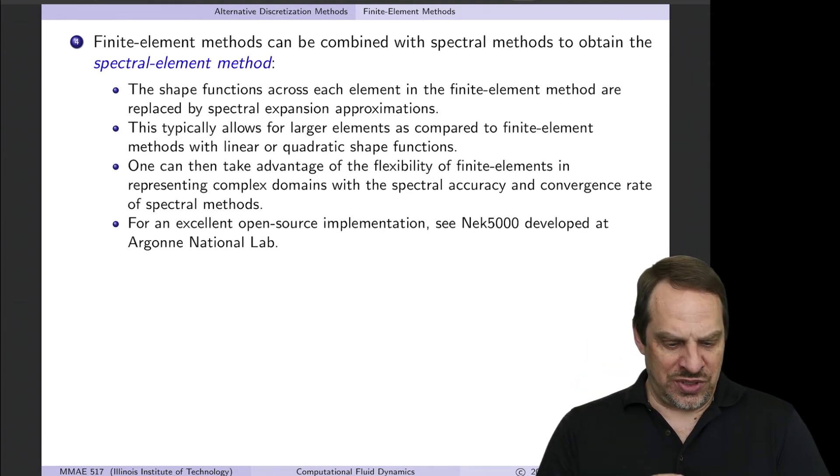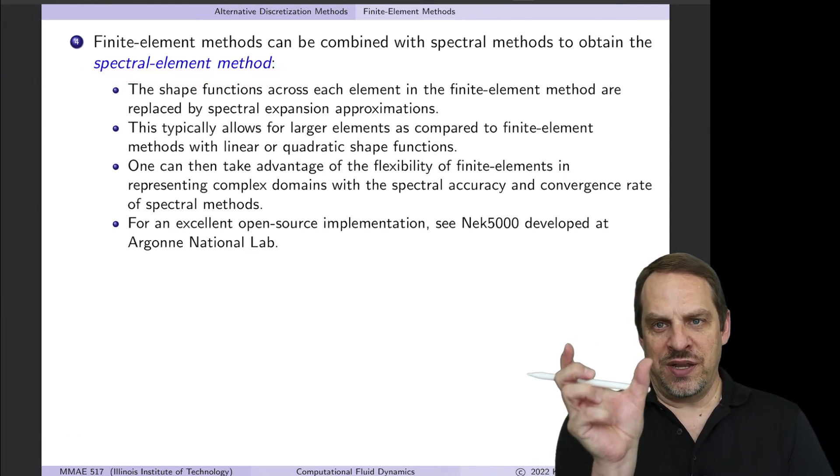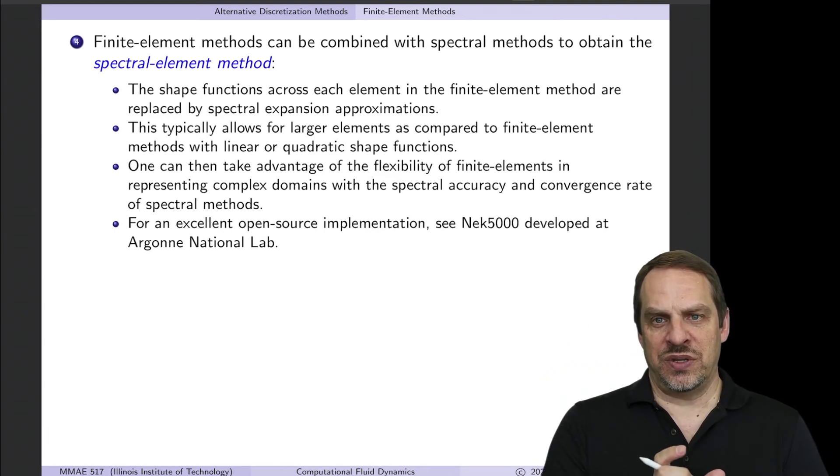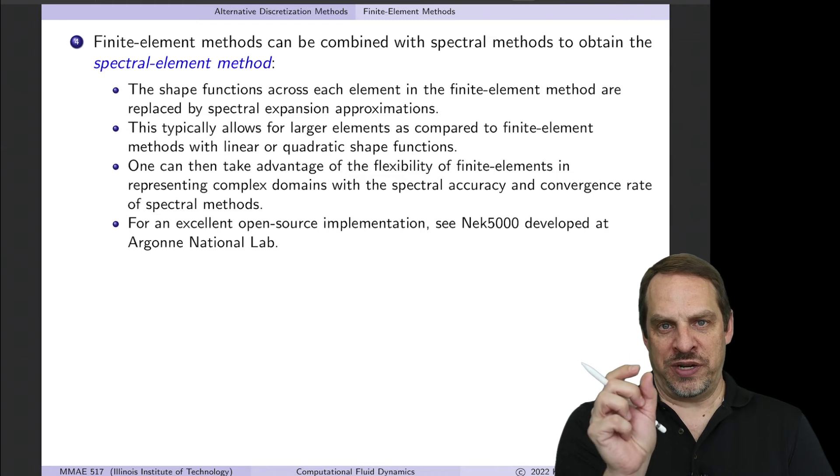You can combine the two together into what's called the spectral element method. So what you're doing is you're dividing up the domain into discrete elements, just like a finite element method, but now these elements are bigger than what you would choose if you're just doing a finite element method.